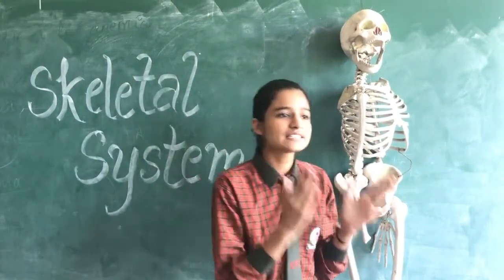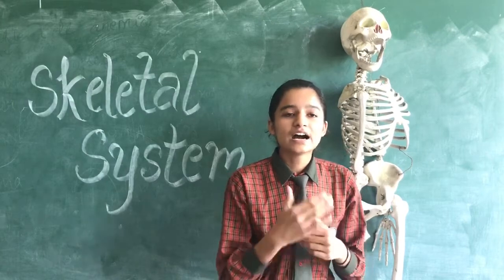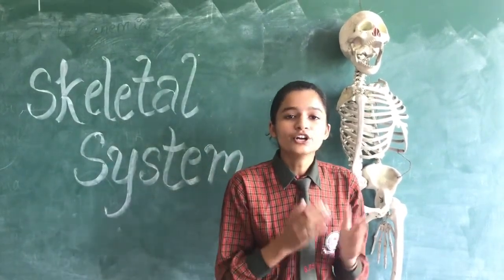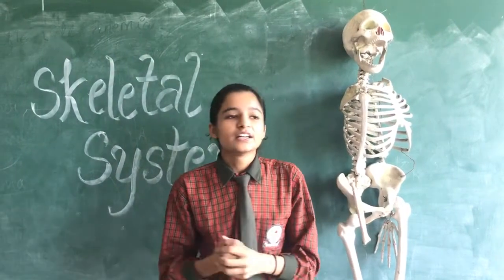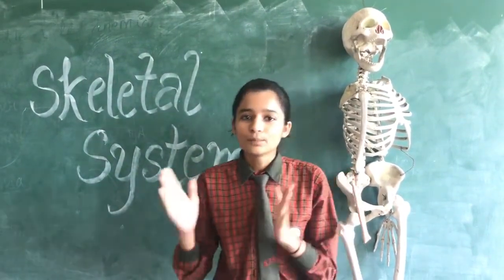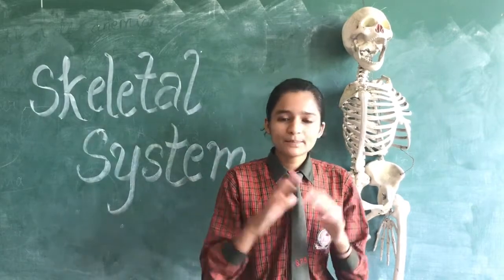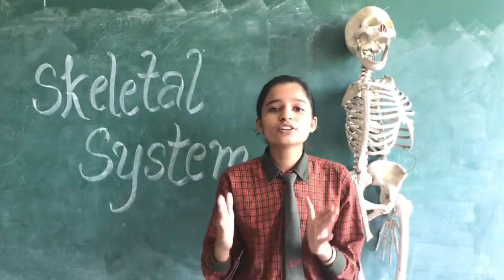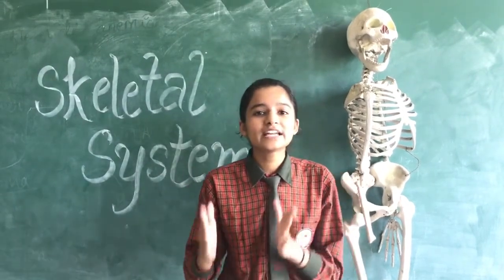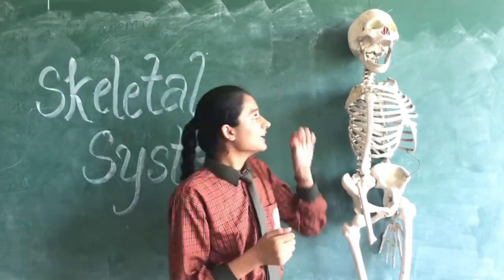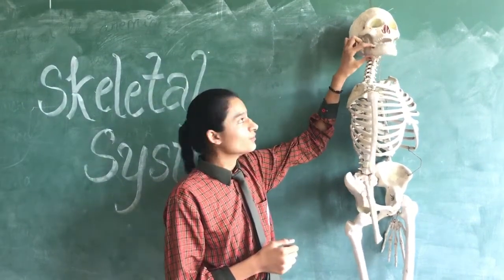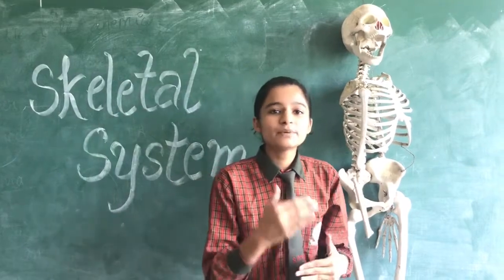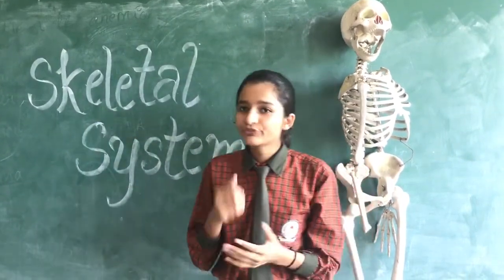Firstly, I will tell you about the skull. Our skull is the hard bony structure present in our head. It protects our brain. It consists of 22 bones, and all parts are hard in the skull except the lower jaw. The lower jaw is hard but it can be moved easily — it is the movable part of the skull. It helps us to talk and chew food easily.